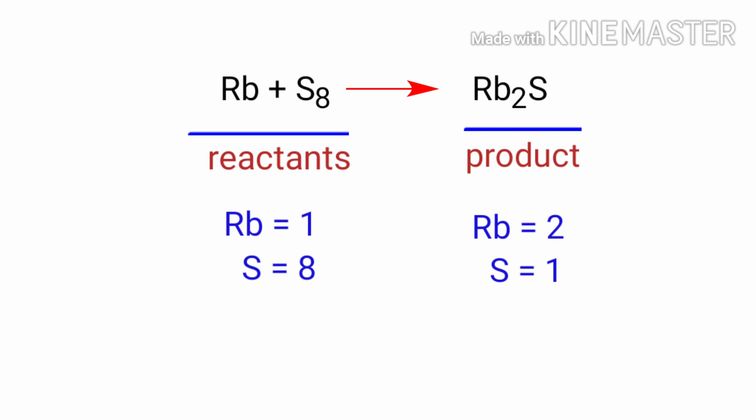In this equation we need to balance the Sulphur atoms first. To do this we need to put a coefficient of 8 in front of Rb2S. The Sulphur atoms are balanced.